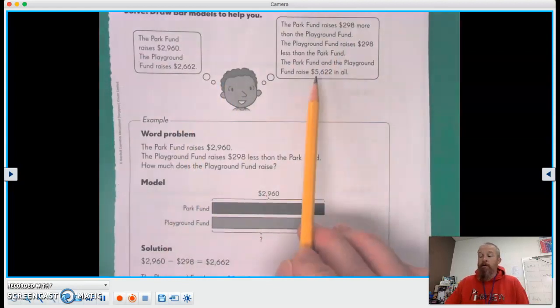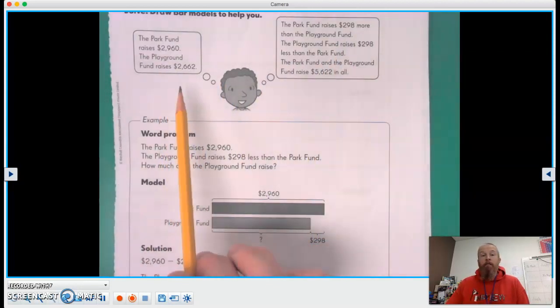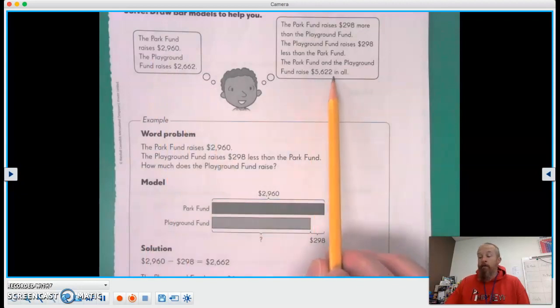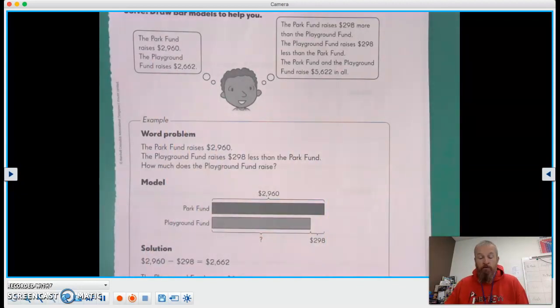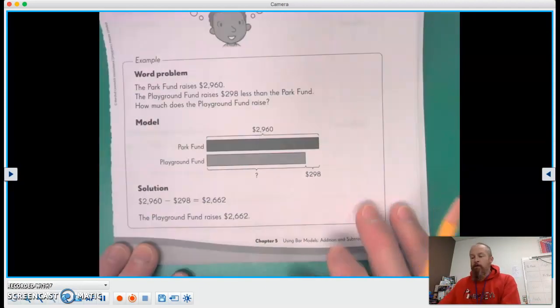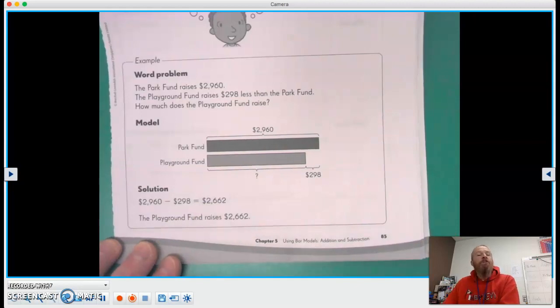They've also figured out that combined, both park and playground have a total fund with $5,622. So they've done all the math already. Now what they're going to do is create their own word problem using the numbers here. And they're going to do the bar model to show what they know, what they need to know, what they're trying to find out, how to use it.